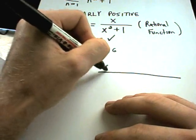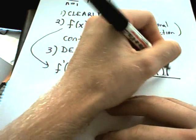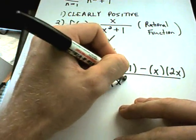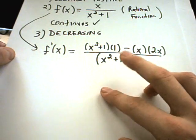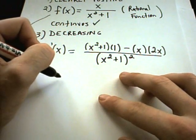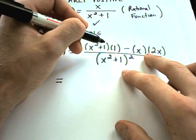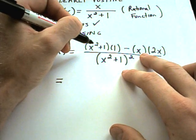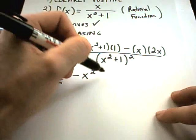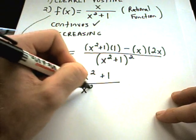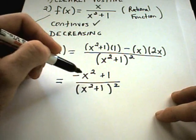The quotient rule says I get the bottom times the derivative of the top minus the top times the derivative of the bottom all over the bottom part squared. You have to figure out where this function equals zero or where it's undefined - those are the critical numbers. Simplifying, on top I'm going to have x squared plus 1 minus 2x squared, so negative x squared plus 1 over x squared plus 1 quantity squared.